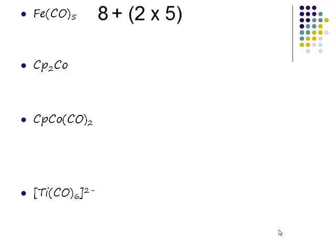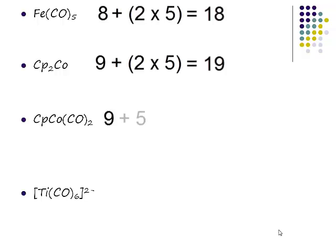Cobalt—what group is cobalt in? Nine. So cobalt is in group 9. A CP ligand is a five-electron donor. How many of those do we have? Two. So 2 × 5 + 9 = 19. For CpCo(CO)2, cobalt is 9, CP is 5, carbonyl is 2 × 2. Top that lot up and we get 18. This is an 18-electron complex.